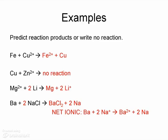If we look at magnesium 2+ reacting with lithium, we see that lithium metal is above magnesium in the activity table. That means that the reaction will proceed and we will form magnesium and lithium+ as our products.